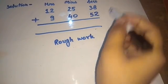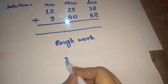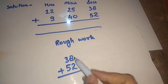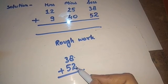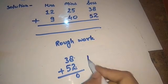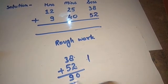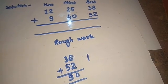In the seconds column, 38 plus 52: 8 plus 2 is 10, 5 plus 3 is 8, then 9 gives us 90. Our answer is 90.